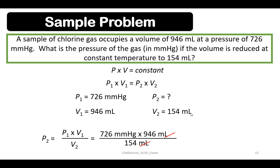Let's cancel mL since it appears in the numerator and denominator. The remaining unit is mmHg. If we do the calculations: 726 times 946 divided by 154, the answer is 4460 mmHg.